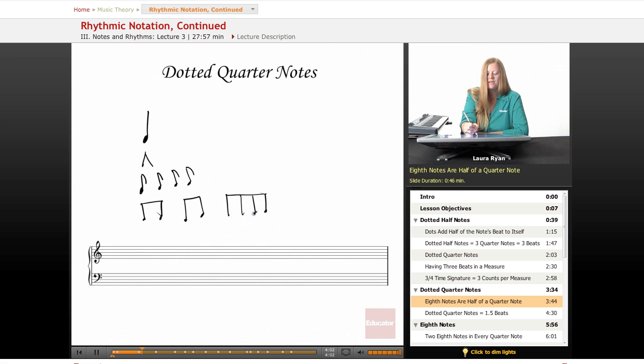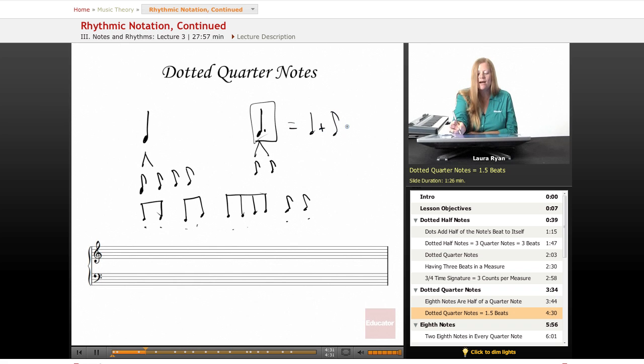Just because they're written connected to one another or separate, it doesn't mean that these are any faster or slower than these. They all mean the same thing. And there's two eighth notes in every quarter note. So when you have one quarter note with a dot, that means you take the quarter note plus half of a quarter note. So since there are two eighth notes in each quarter note, the dotted quarter note equals one and a half beats.